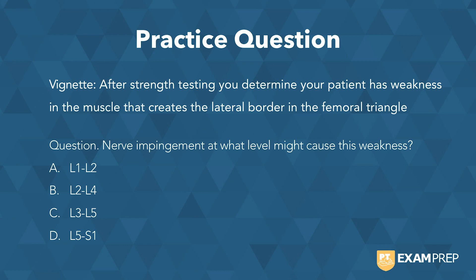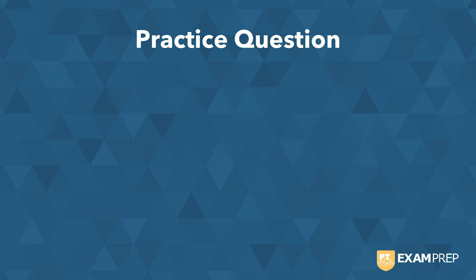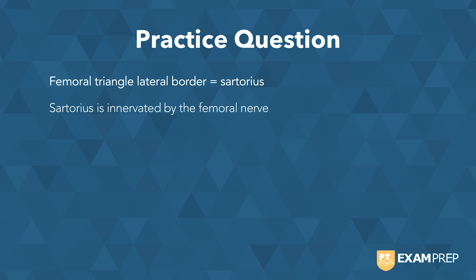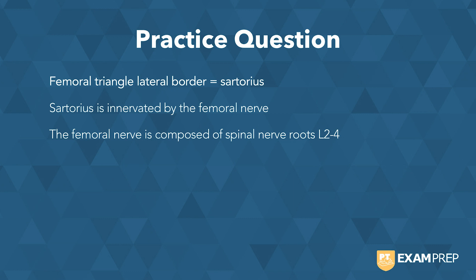Let me take you through how we got to this. First, we have to think about the lateral border — we know it is sartorius. Sartorius is innervated by the femoral nerve, and you should know this right away because anatomy is so important for your exam. Next, the femoral nerve is composed of spinal nerve roots L2 to L4. Building anatomy upon each other to get to the answer — therefore, we know the answer is L2 to L4.